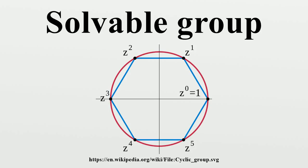Properties: Solvability is closed under a number of operations. If G is solvable and there is a homomorphism from G onto H, then H is solvable. Equivalently, if G is solvable and N is a normal subgroup of G, then G/N is solvable. This can be expanded: G is solvable if and only if both N and G/N are solvable. If G is solvable and H is a subgroup of G, then H is solvable.